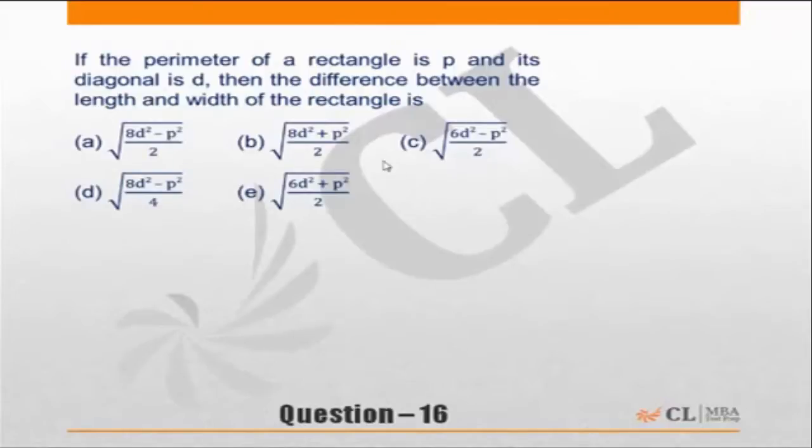We can solve this as we have given 2L plus 2B is equal to P and L square plus B square equal to D square. Then we need to find the difference between the length and width of the rectangle.